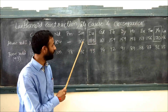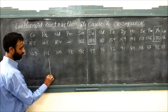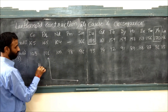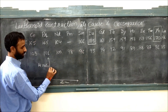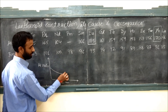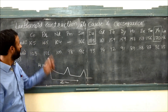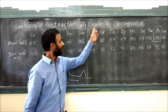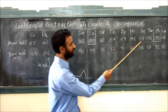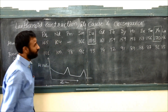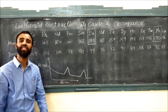At europium there is a jump. If we plot atomic radii versus atomic number, first there is a slight decrease, then there is a jump at europium, then again a jump, then again a decrease — a very slight decrease in size overall.